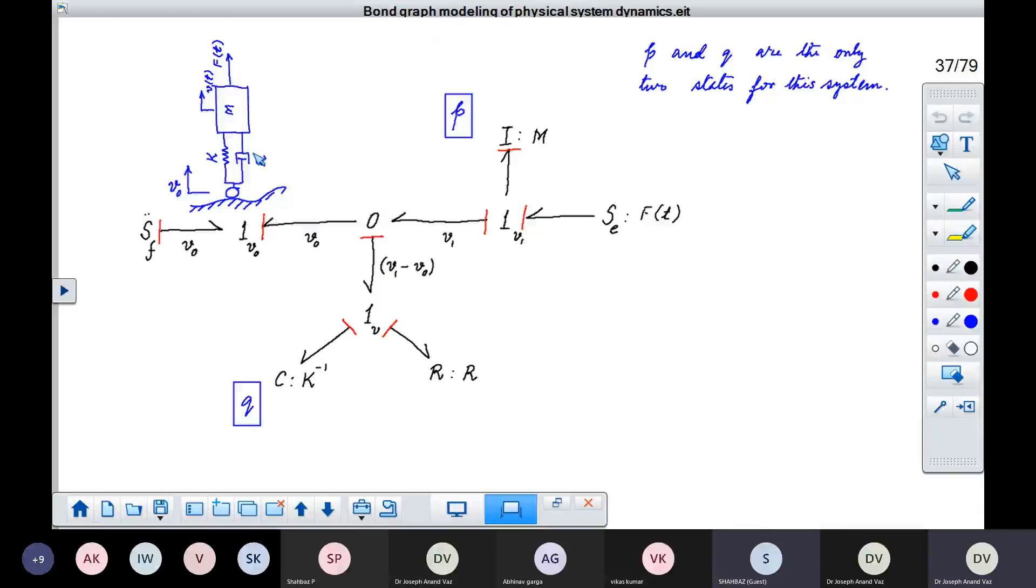And in order to model this C and R elements, we take the relative motion, V1 minus V0. Now, here, this time, this is not equal to 0 because it is not a fixed end. So here, we have V1 minus V0. We have to take the relative motion.